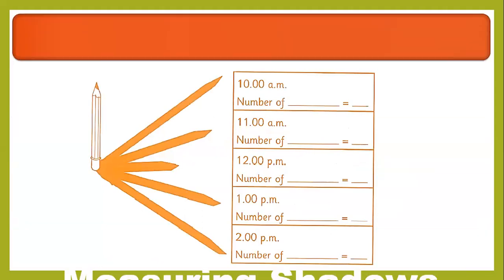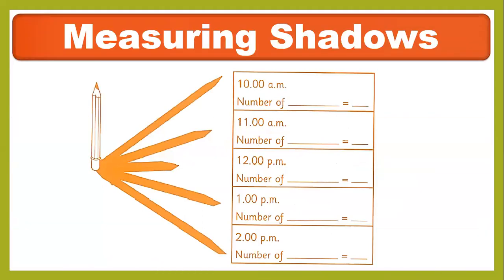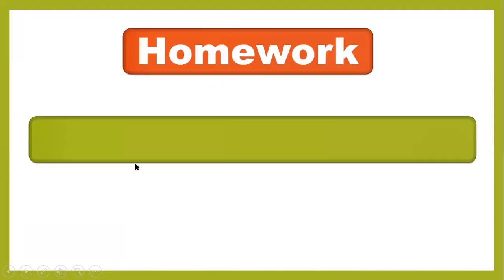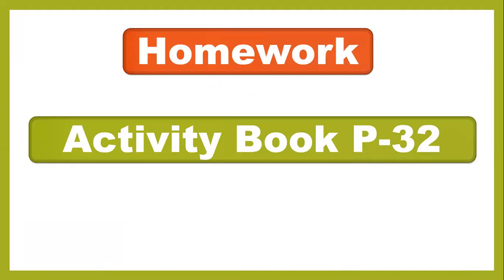This is the activity you have to complete at home. You have to measure the shadow at 10 a.m. using a ruler. Look at the noon time — at 12 p.m. the shadow is short. This homework is on page 32. Thank you so much for watching, goodbye and good luck!